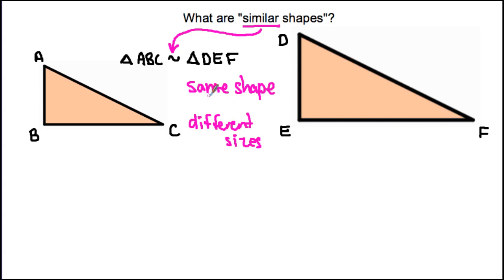The idea of them being the same shape means that the angles in both shapes are identical. We show this using specific angle markings. For example, angle B is a right angle and it's in the middle of the triangle's name. The angle also in the middle of the other triangle's name is angle E, so angle B matches up with angle E — both are right angles.